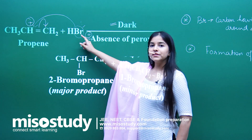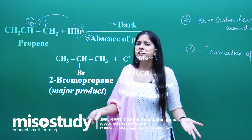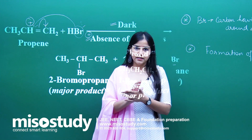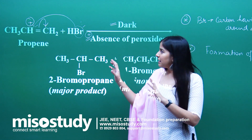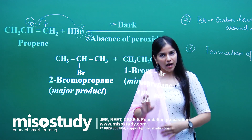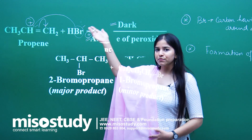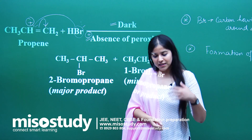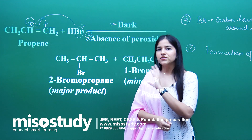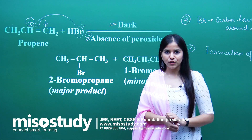Now, why HBr? Why not HI, HCl, or HF? Because HI, HF, and HCl all have unfavourable reactions with such alkenes — some steps are endothermic, meaning heat must be provided. But in the case of HBr, all steps are exothermic — they release energy and lead to stability. That is why HBr gives a very stable, very favourable reaction, and that is why we prefer HBr in Markovnikov's rule.